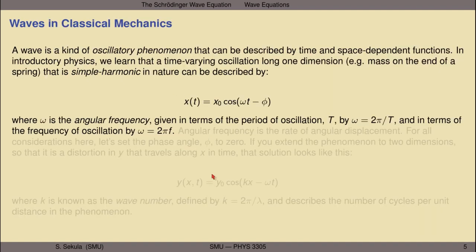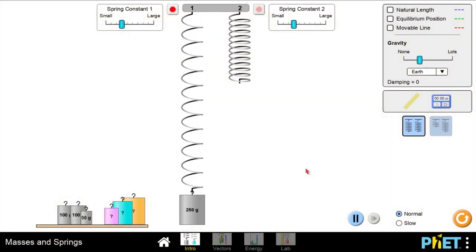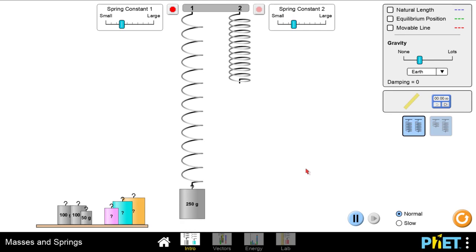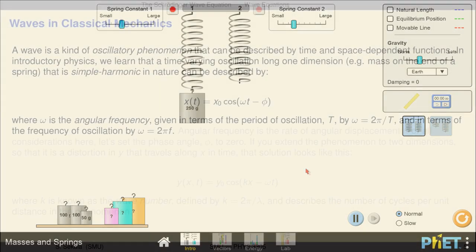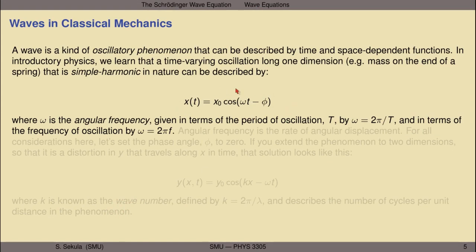Let's take a peek at waves, beginning with classical mechanics. An introductory physics class would have taught you about oscillatory phenomena. A wave is just another kind of oscillatory phenomenon that can be described by time and space-dependent functions. In introductory physics, we learn that a time-varying oscillation along one dimension — for instance, a mass on the end of a spring bouncing back and forth — can be described as simple harmonic in nature. This allows us to write a mathematical function involving the cosine of frequency and time and an offset, with amplitude being maximal at zero. This is a typical equation you might see in introductory physics to describe an oscillatory phenomenon.